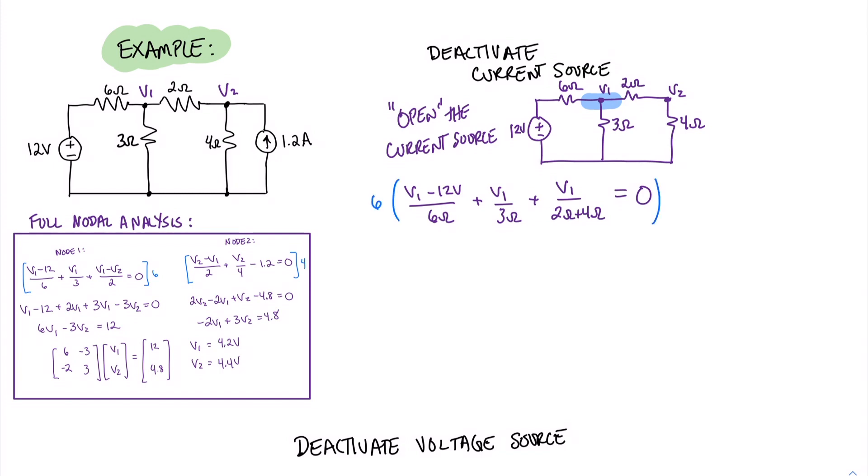Multiplying the 6 out, I get V1 minus 12 plus 2V1 plus V1 equals zero. And solving this, I get 4V1s equal 12, which means that V1 equals 3.